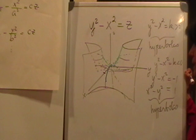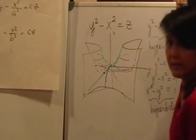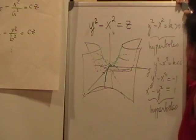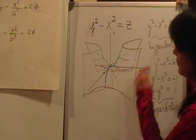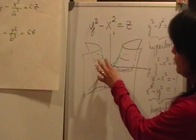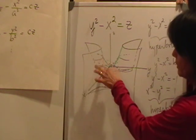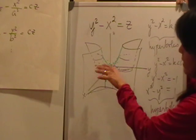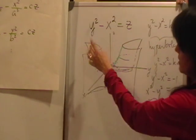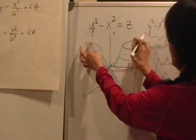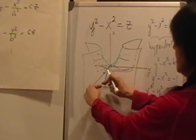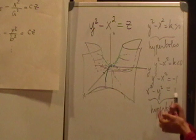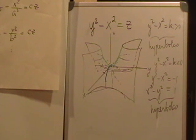Hopefully that looks like a saddle. A Pringle chip is a great real-world example of a hyperbolic paraboloid — try grabbing one and finding the traces: parabolas opening flat and sideways, and hyperbolas opening sideways and front-to-back. That's your hyperbolic paraboloid.